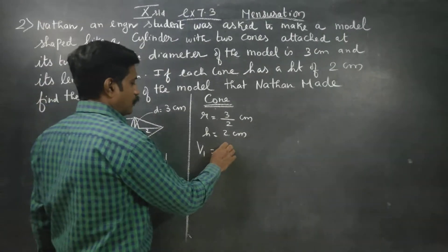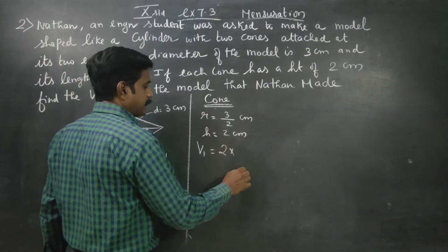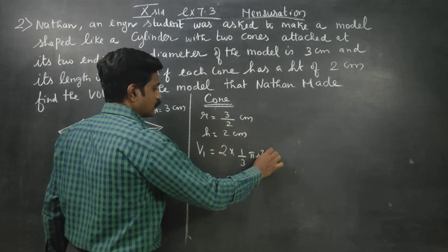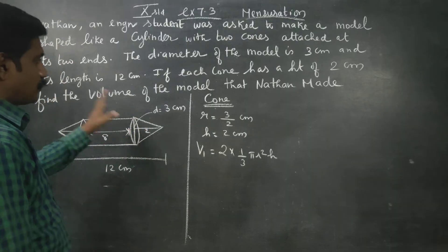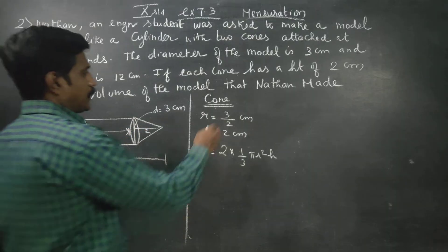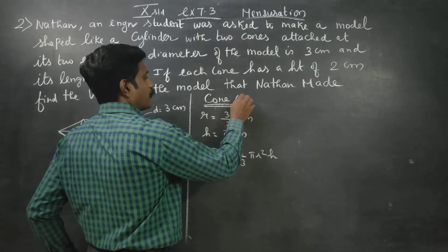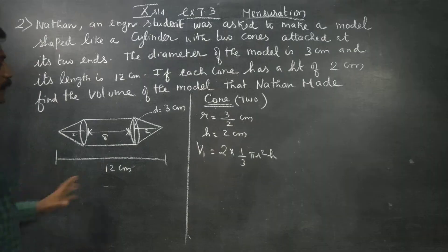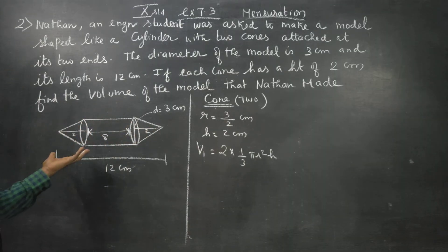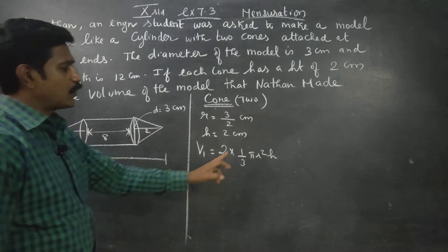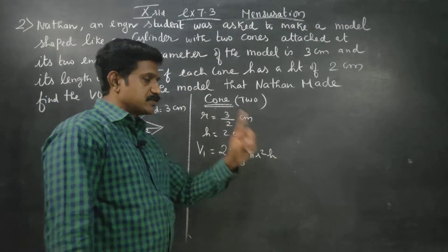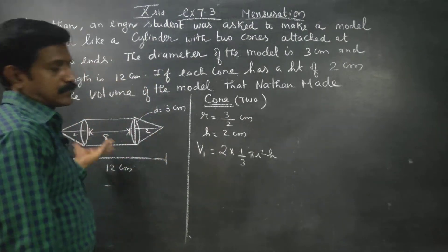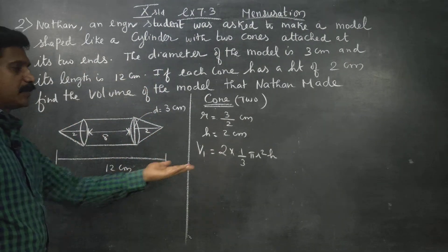The volume of both cones combined is 2 times (1/3)πr²h. The radius r is 3/2, so r squared is (3/2)², and height h is 2 centimeters. Applying the formula: 2 × (1/3) × π × (3/2)² × 2, which gives 3π.